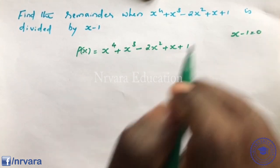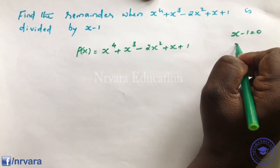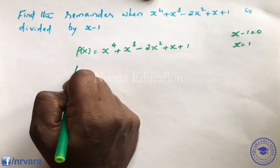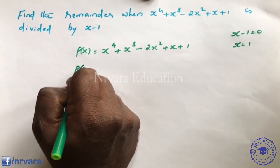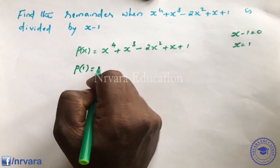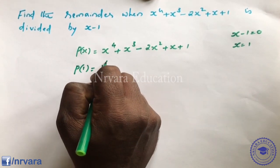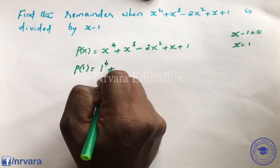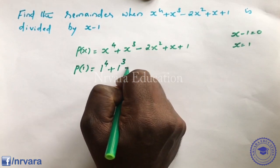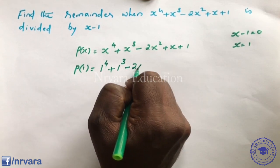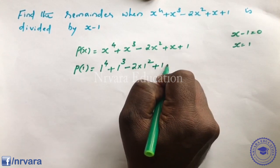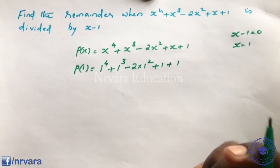Set x - 1 = 0, so x = 1. Substitute this value: p(1) = 1⁴ + 1³ - 2 × 1² + 1 + 1.